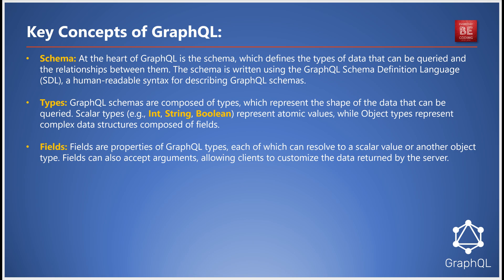Let's break down the types in a GraphQL schema. There are scalar types like integer, string, and boolean, which represent simple values. Then there are object types that bundle complex data structures together. Each type is composed of fields. Fields can resolve to either scalar values or other object types, and can accept arguments to tailor the data returned by the server.